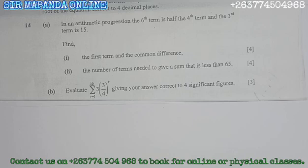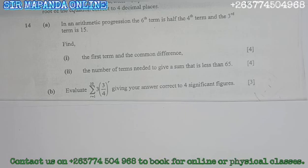It reads: In an arithmetic progression, the sixth term is half the fourth term, and the third term is 15. Find the first term and the common difference — four marks.